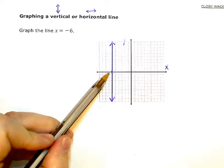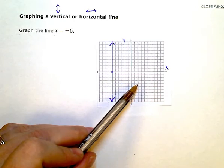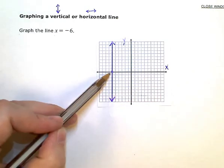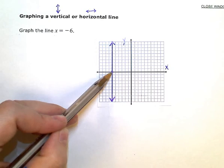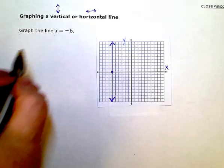This line does not touch the y-axis anywhere. It's parallel, in fact, to the y-axis. But I'm crossing the x-axis at negative 6. That's my intercept.